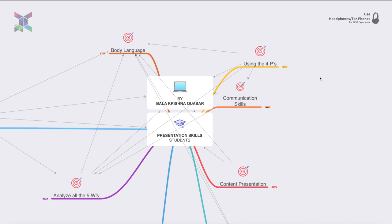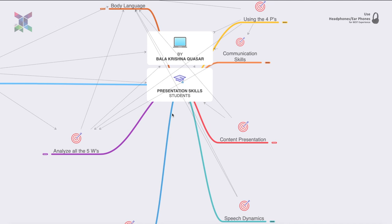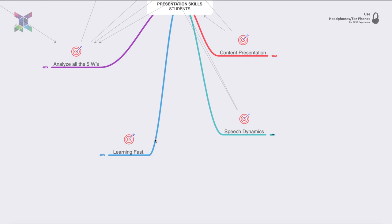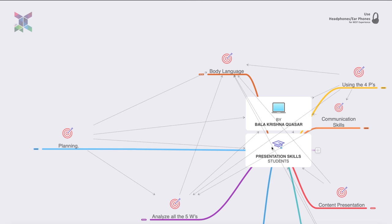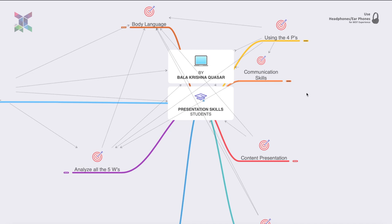If you look into presentation skills, we have eight most important factors: communication skills, four P's, content presentation, speech dynamics, learning fast, analyzing five W's, how to plan for a presentation, and body language.